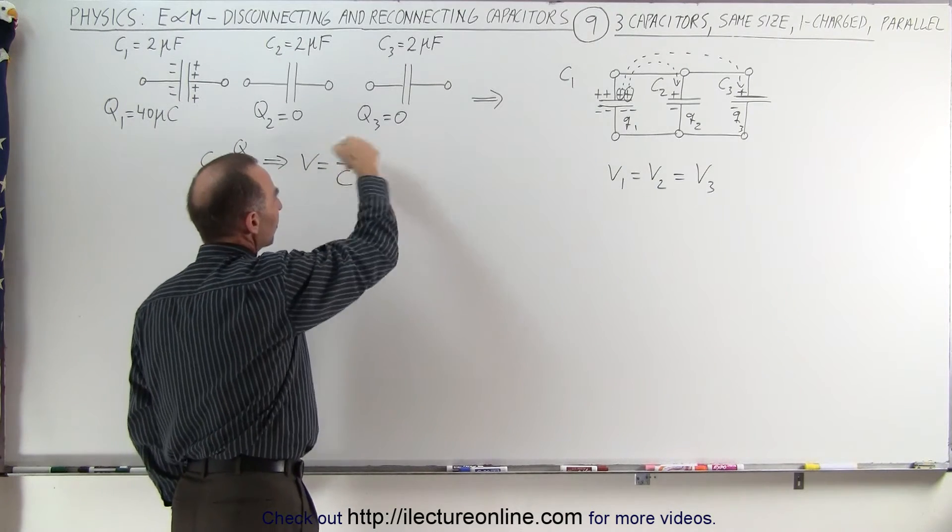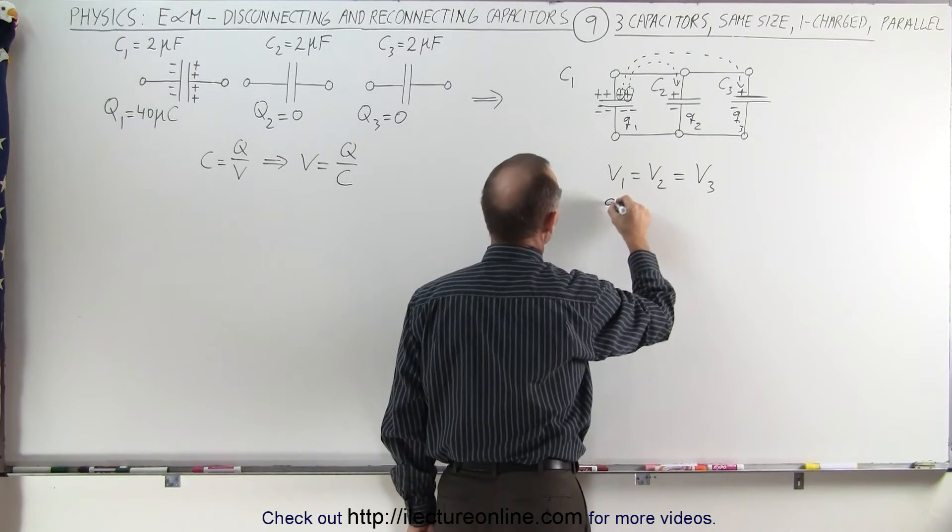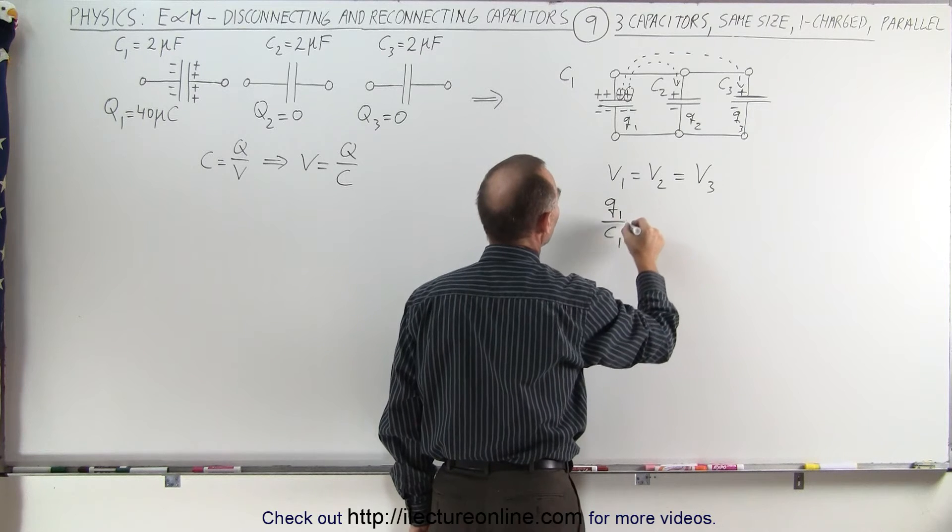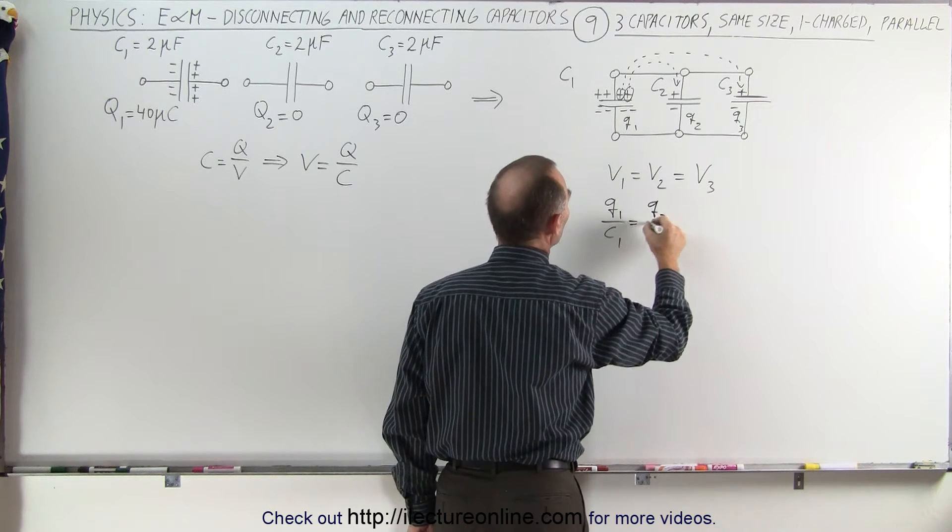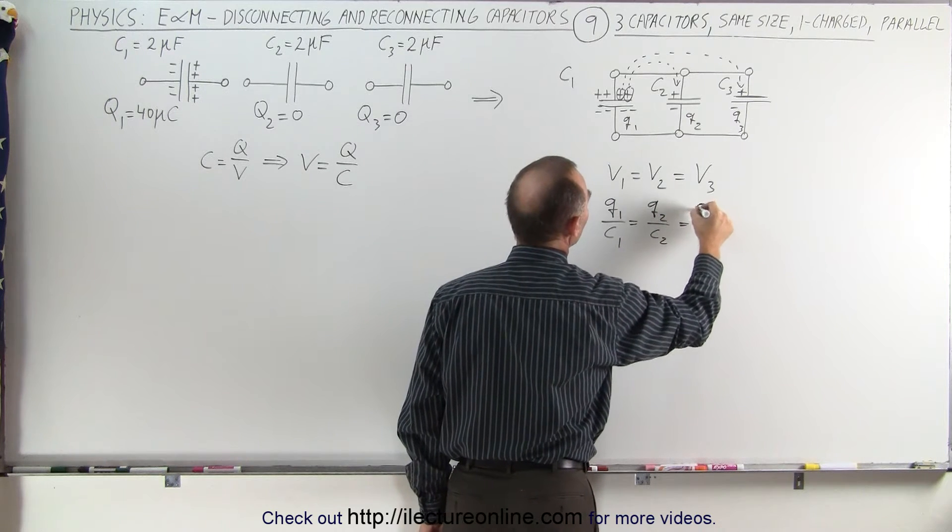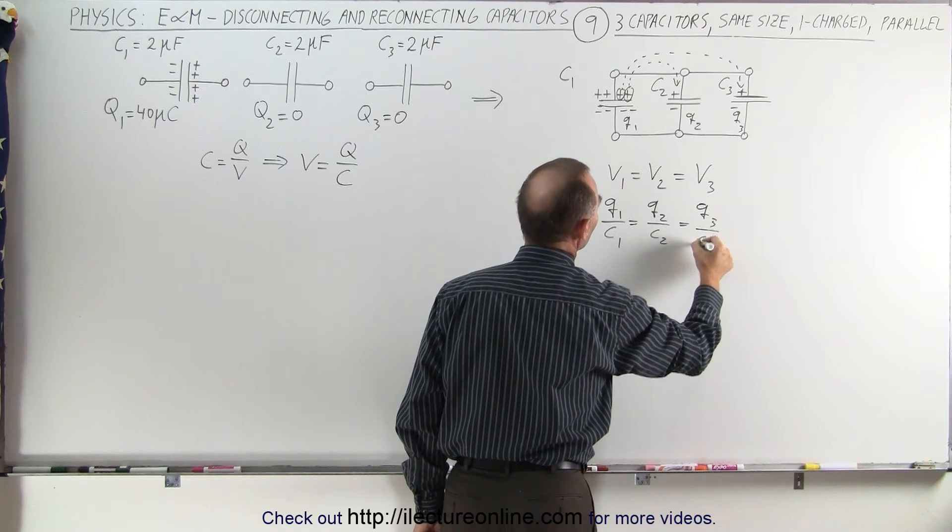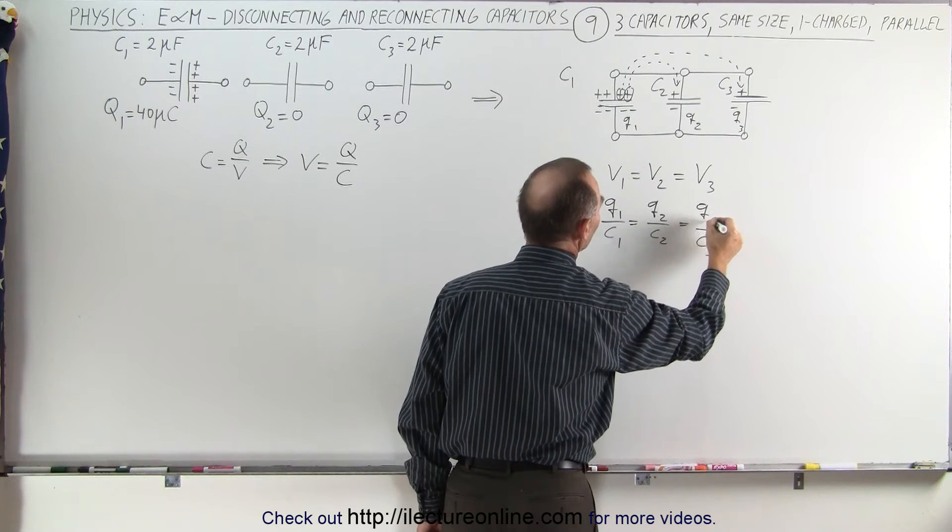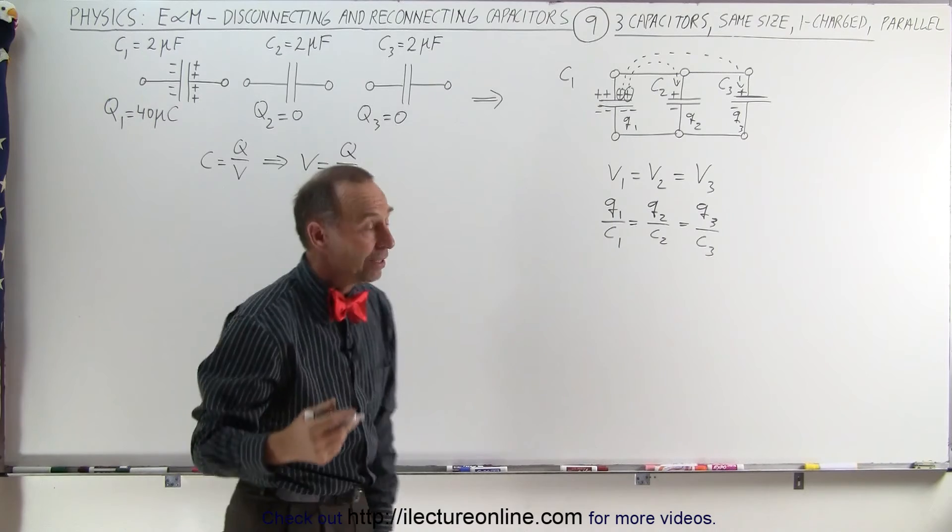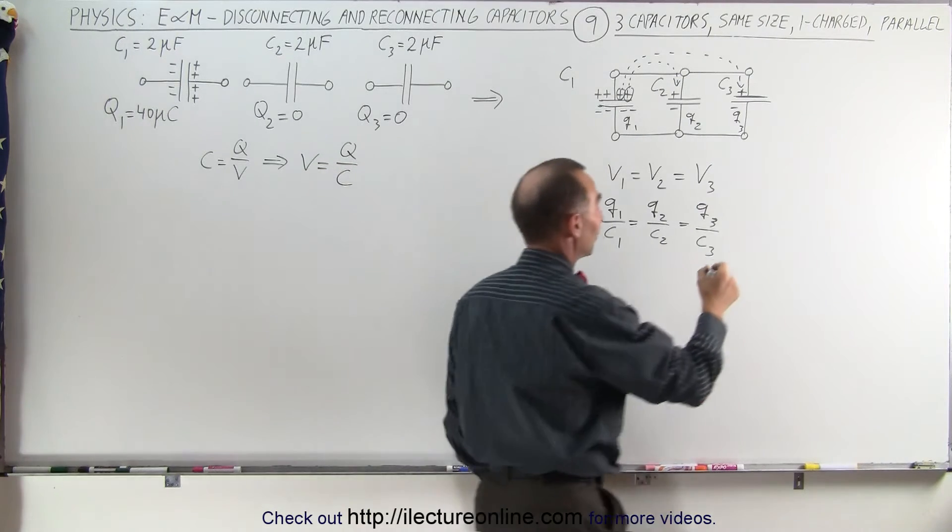If we now use this relationship, that means that the final Q1 over C1 must equal Q2 over C2, which must equal Q3 over C3. And in this example, it makes it quite easy because we can see that C1...